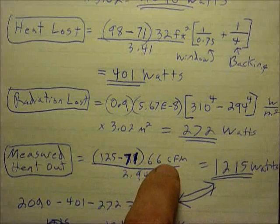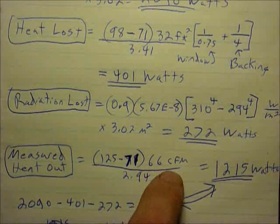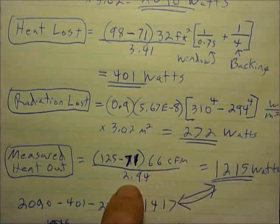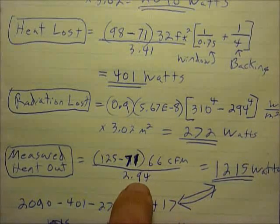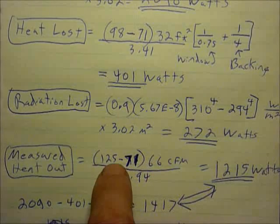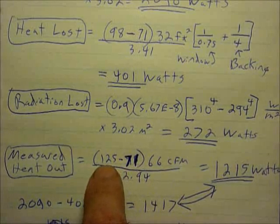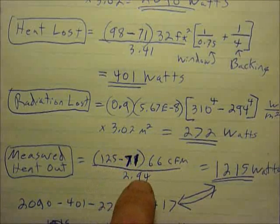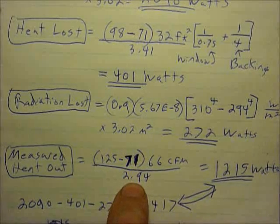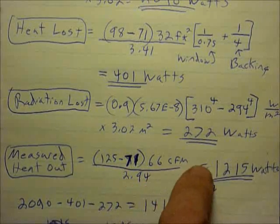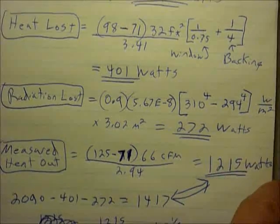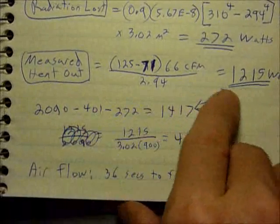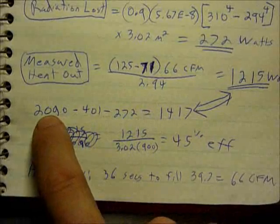I measured this setup to have 66 cubic feet per minute at standard conditions. This is a conversion factor for feet per minute and temperature difference. This is the outlet temperature minus the inlet temperature, so that's how much the air was heated for heat capacity. This is a conversion factor for the heat capacity of air for cubic feet per minute and Fahrenheit. This comes out to be 1,215 watts.